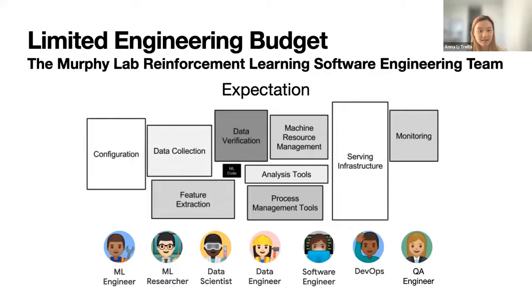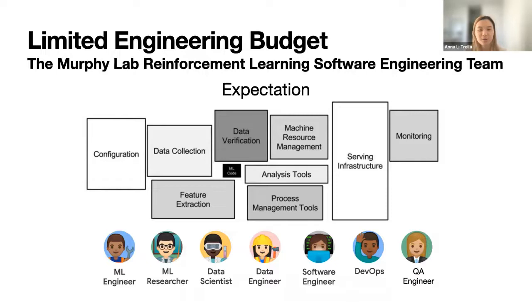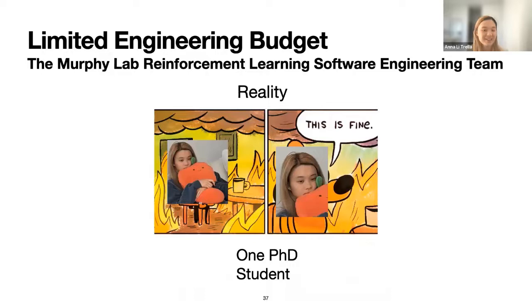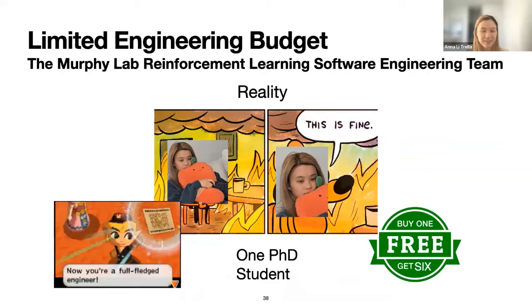Regarding limited engineering budget: for the Murphy Lab RL software engineering team, building a production-ready algorithm requires a whole team covering data collection, cleaning, testing, QA testing, deployment, infrastructure, and ML research validation. Each role is integral to the deployment pipeline. But your expectation of having a whole team might collide with reality: you may only have one PhD student. I call this the 'best buy one, get six free' deal.